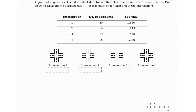Welcome back to Civil Engineering Academy. My name is Marina and today I'm going to be solving a problem for the PE Transportation exam. The problem states: a group of engineers collected accident data for four different intersections over five years. Use the data below to calculate the accident rate in crashes per million entering vehicles for each one of the intersections. We have four intersections, the number of accidents, and the total entering vehicles per day.